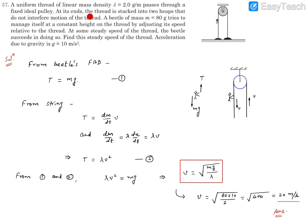fixed ideal pulley at its ends. The thread is tagged into two heaps that do not interfere with motion of the thread. A beetle of mass M equal to 80 gram tries to manage itself at a constant height